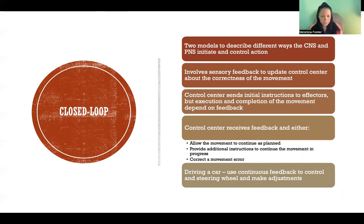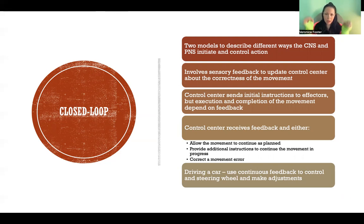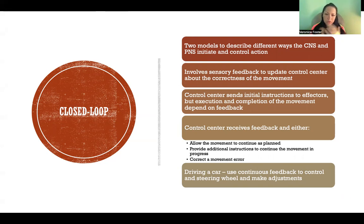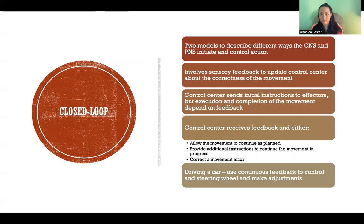The control center — meaning the brain — receives the feedback and either allows the movement to continue as planned, provides additional instructions to continue the movement in progress, or corrects a movement error. The cerebral cortex sends instructions to the muscles to initiate an action, and then we get sensory feedback: visual feedback, proprioceptive feedback, touch feedback. All kinds of sensory feedback go back to the brain, which then corrects and updates the pattern to correct a movement error or continue as planned, to be as accurate as possible.